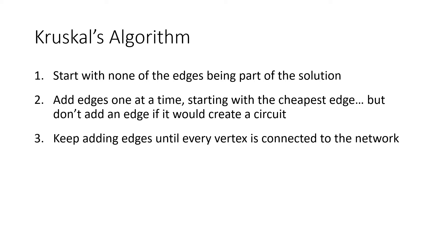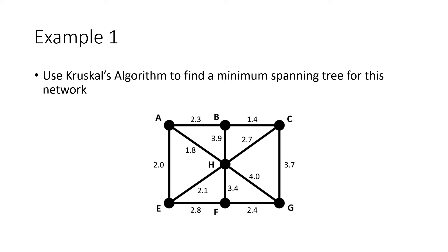Kruskal's algorithm is a step-by-step process. We start with none of the edges being part of our solution, then add edges one at a time starting with the cheapest edge, but we don't add an edge if that would create a circuit. We skip any edges that would create a circuit and keep going until every vertex is connected to the network.